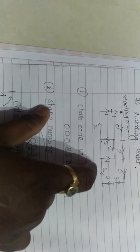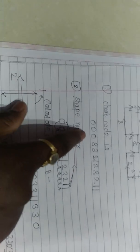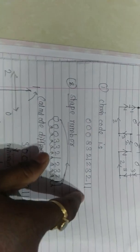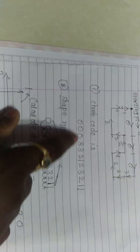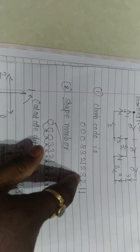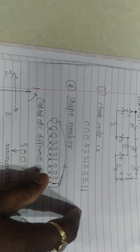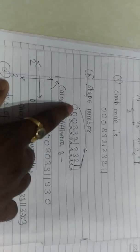We write the chain code according to the direction traced. The chain code of this given figure is: 0, 0, 0, 3, 3, 2, 1, 2, 3, 2, 1, 1.